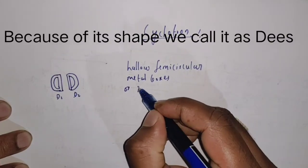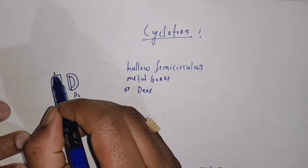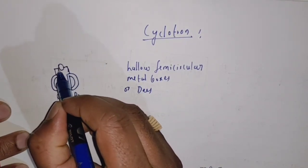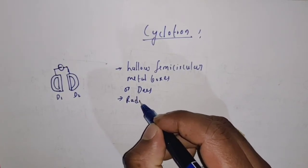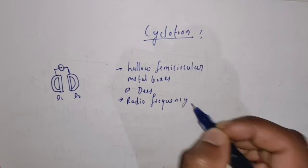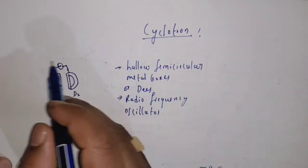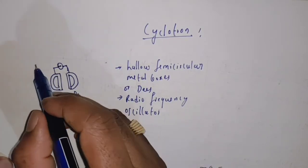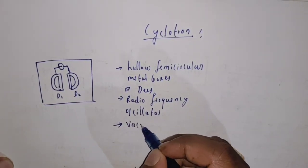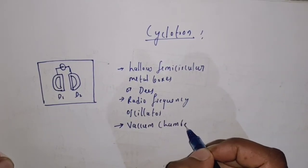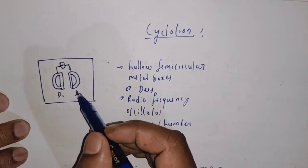These two are called D's, and these two D's are connected to a high frequency oscillator, also called a radiofrequency oscillator. This complete setup is enclosed in a vacuum chamber.